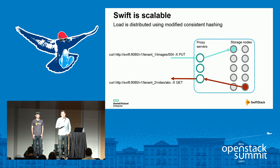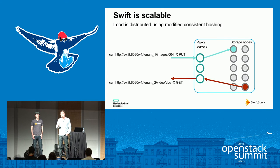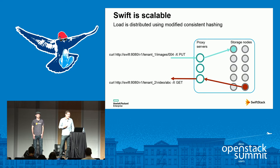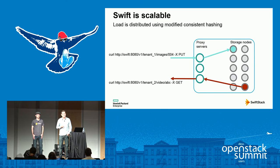Objects are distributed evenly across the pool of storage nodes, which means load is distributed evenly across the nodes — that aids in scaling out Swift. The proxy server chooses a particular storage node by using a hash of the object's name. That's a deterministic operation, so the proxy server doesn't need to do a large amount of lookup to find where any object is stored or to find an object a client wants to read back.